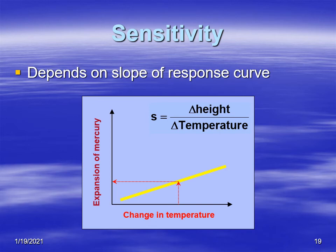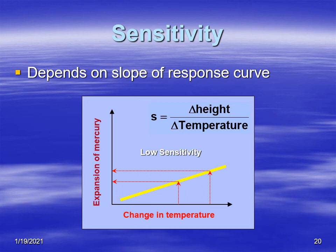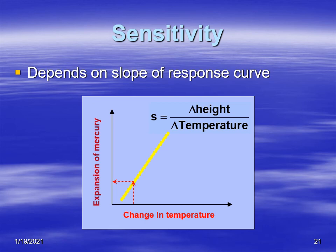Looking at a plot of sensitivity: a change in temperature gives you a change in the height of mercury or alcohol in the thermometer. In one example, there's a big change in temperature but a small change in the expansion of mercury — this would be low sensitivity, comparable to the pool thermometer. In a different curve, for more or less the same change in temperature you get a huge change in the height of mercury — this indicates high sensitivity. This applies to any type of meteorological instrument, but we're looking specifically at thermometers in these examples.